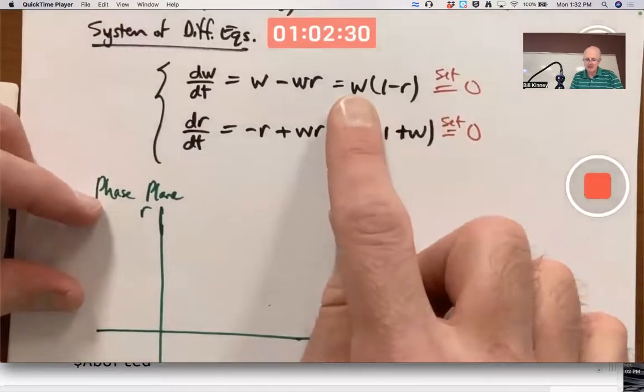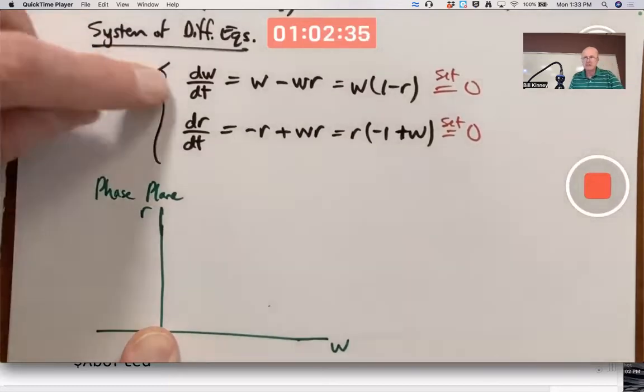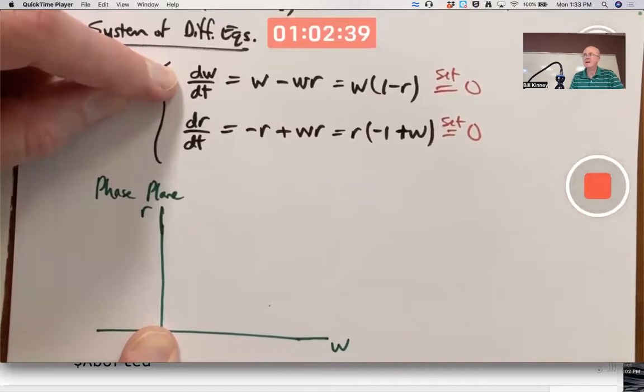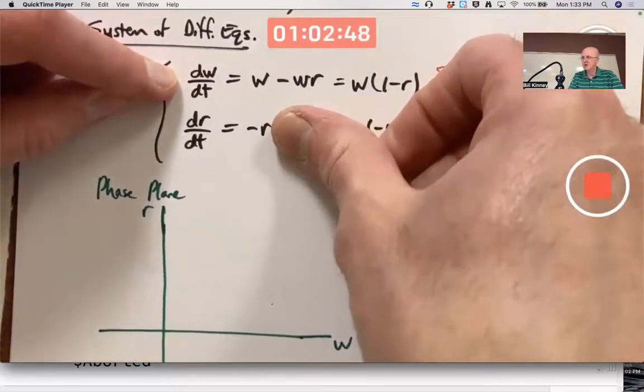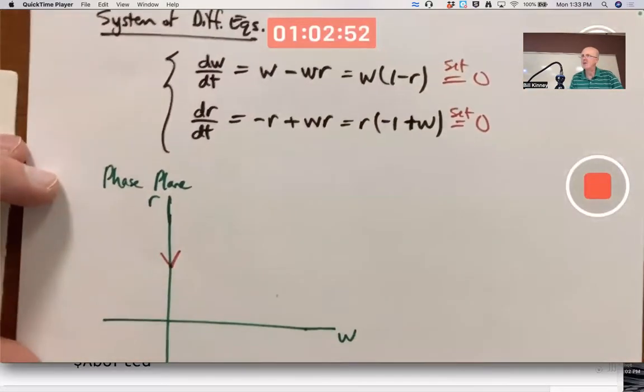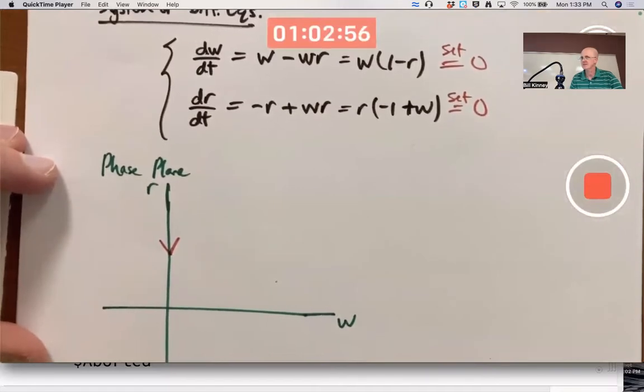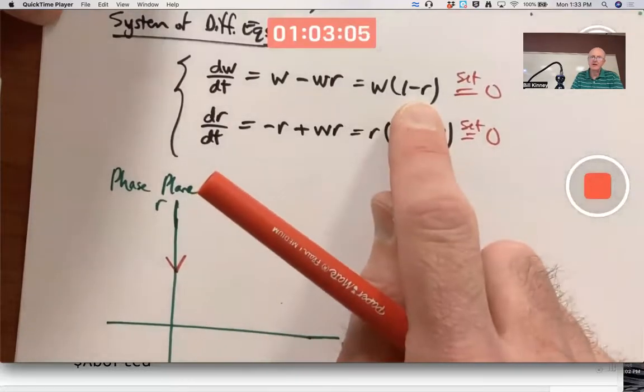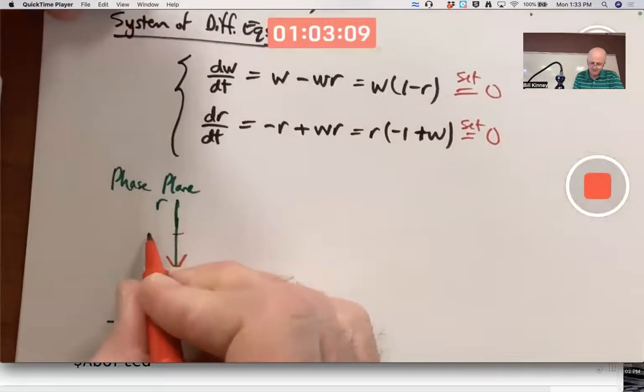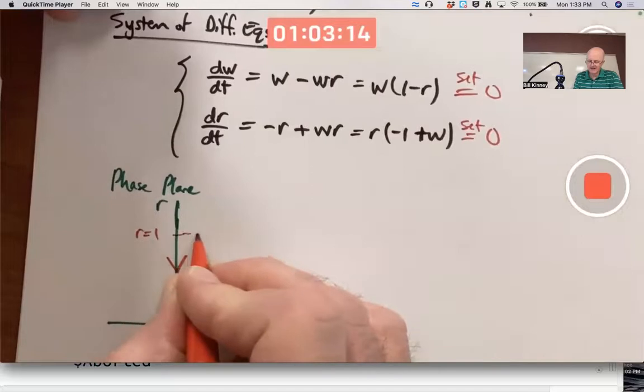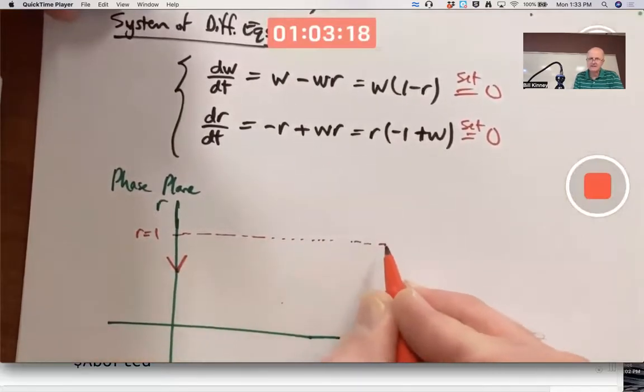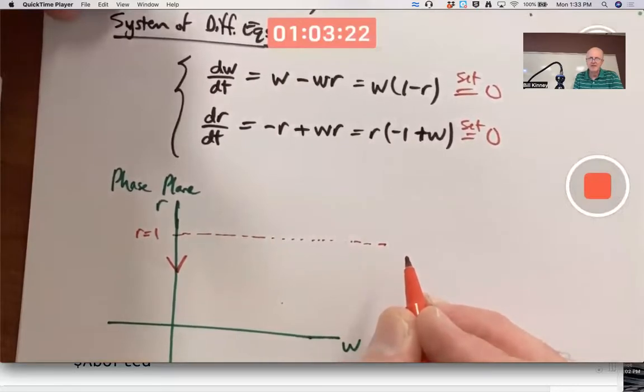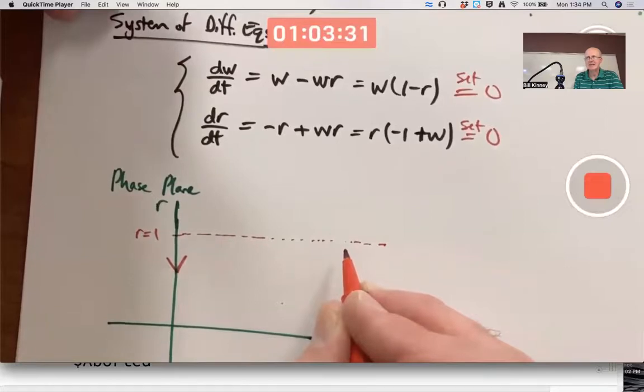Coming back to these nullclines, when W is zero, in other words when you're on the R-axis, dW/dt is zero. If there's no worms to start with, there are never going to be any worms. And dR/dt is exponential decay, your solution will decay towards zero. Draw an arrow pointing downwards. dW/dt is also zero when R equals one. Draw a horizontal line there. When R is one, dW/dt is zero. The rate of change of the worm population is zero when a solution curve crosses this line.